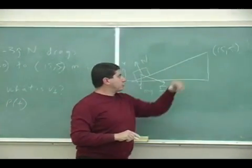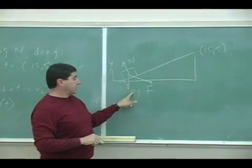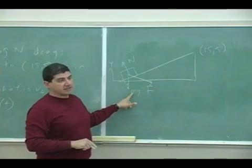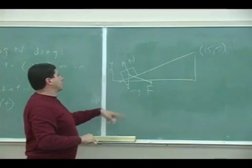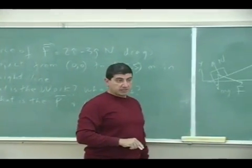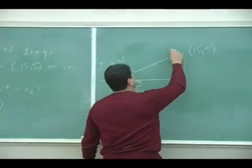As that object goes over there, the force is going to do work on it and mg is going to do work on it. The gravity is going to do work. It's going to do negative work. So I'm going to have to find the work done by the force and the work done by gravity on that object in order to find its final velocity.